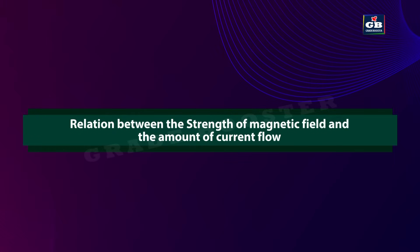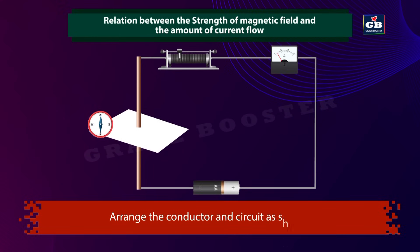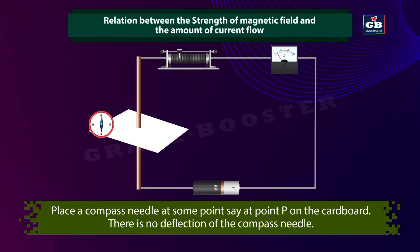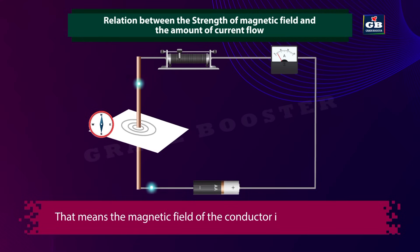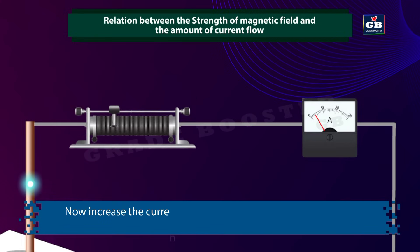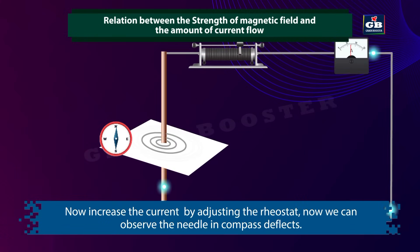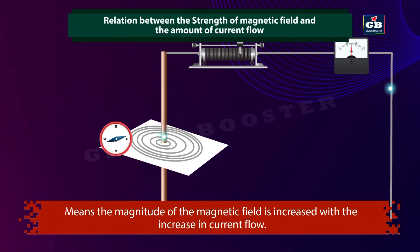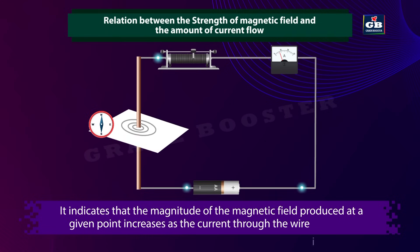Now let us see the relation between the strength of the magnetic field and the amount of current flow. Arrange the conductor and circuit with a rheostat to increase and decrease the current, and an ammeter to measure it. Place a compass needle at point P on the cardboard — there is no deflection, meaning the magnetic field does not extend that far. Now increase the current by adjusting the rheostat, and the compass deflects, indicating that the magnitude of the magnetic field increases with an increase in current flow.